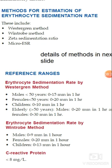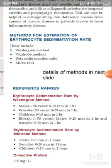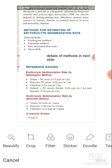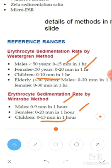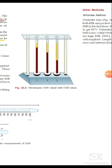As a recap on reference ranges: for males it is 0 to 9 mm using Wintrobe. For females, 0 to 20 mm is the same for both Westergren and Wintrobe; for males it is 0 to 15 (Westergren) or 0 to 9 (Wintrobe). In children the ESR will be even less — they don't sediment as fast.